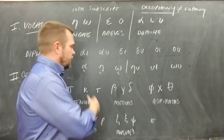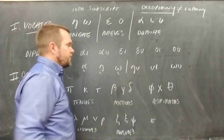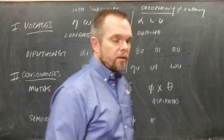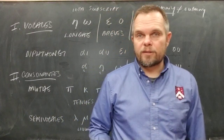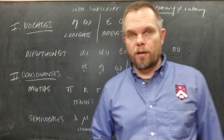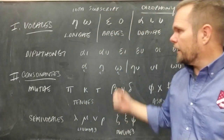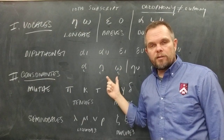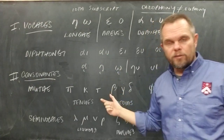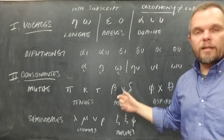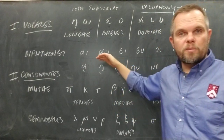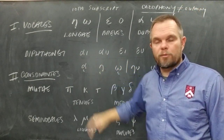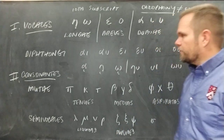So: 12 diphthongs in Greek — 12 pairs of vowels found in a single syllable. Six are called proper or true diphthongs, and six are called improper. The first three improper diphthongs are improper because the iotas are not pronounced (iota subscript). The last three are not proper because they are cacophonous — they just don't sound nice. Know how many there are, know what they are, know how each is pronounced, and understand the difference between proper and improper diphthongs.